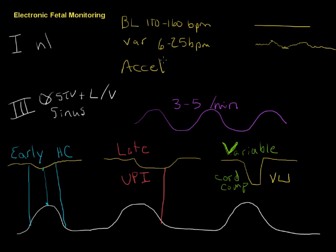If you have a class three tracing, so absence of variability, presence of late or deep variables repeatedly, or a sinusoidal rhythm, then you really do have a risk for a baby who's in trouble. Proceeding with C-section is reasonable. That still doesn't mean that you take a lady with a bad airway and induce general anesthesia, but moving expediently toward delivery is very reasonable.